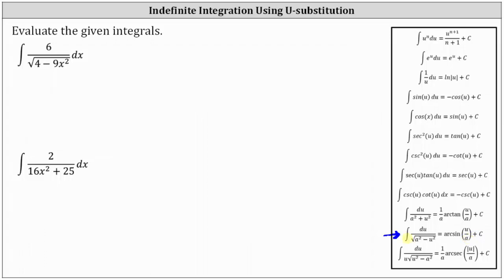Let's rewrite the integral so it better fits this form. This is equal to the integral of six divided by the square root of a squared — since two squared equals four, we have the square of two — minus u squared, where u is a function of x, and nine x squared is equal to the square of three x. So now we can identify a equals two and u equals three x.